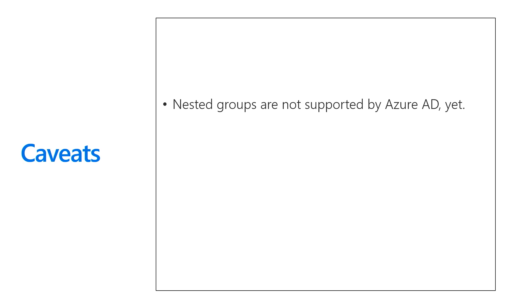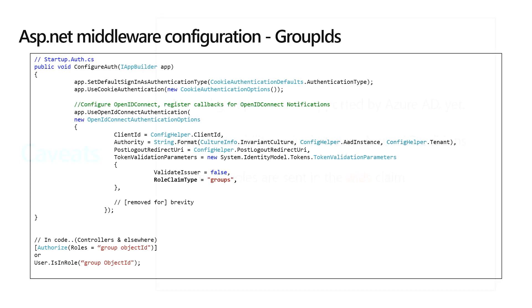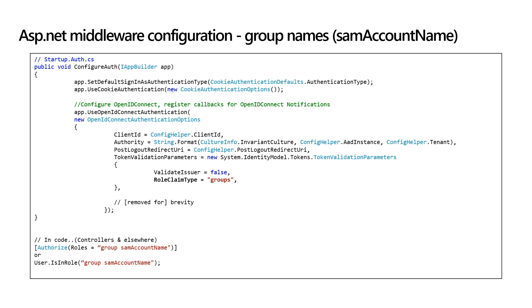Caveats for this functionality: we don't support nested groups. Group capability is a P1 license feature between Azure AD editions. Azure AD roles are sent in the WIDS claim. For the configuration with group IDs, you configure Azure Active Directory and say: I want the role claim type set to 'groups'. When groups are returned, the ASP.NET middleware puts those groups as a role claim, so you can actually do roles equals group object ID and hard-code authorization. But keep in mind: group object IDs are typically different per tenant. So if you build a multi-tenant application, make sure there's some way for an administrator to specify this — hard-coding limits your flexibility. You can also use SAM account names, which is a more readable format, but again only for on-premises groups.